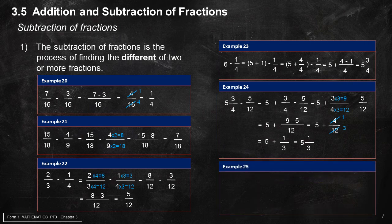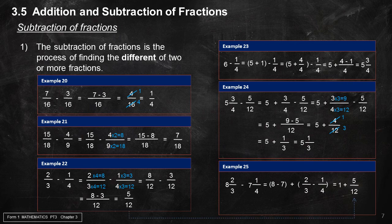Example 25: 8 and 2 over 3 minus 7 and 1 over 4 equals (8 minus 7) plus 2 over 3 minus 1 over 4. This gives 1 plus 5 over 12, which equals 1 and 5 over 12.